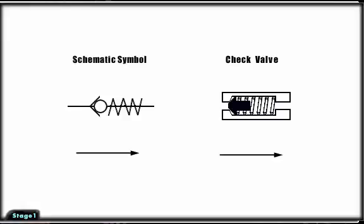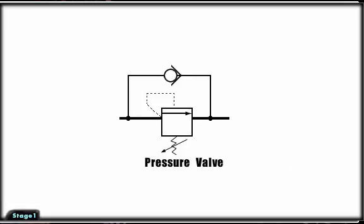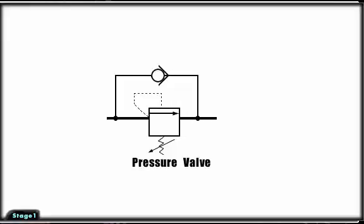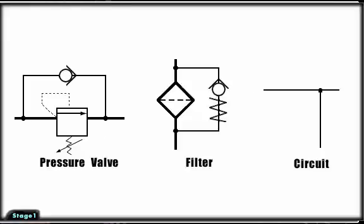The simplest check valve allows free flow in one direction and blocks flow from the opposite direction. This style of check valve is used when flow needs to bypass a pressure valve during return flow, as a bypass around a filter when a filter becomes clogged, or to keep flow from entering a portion of a circuit at an undesirable time.